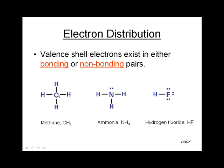Carbon does not have any non-bonding electrons around it. Let's look at the next example — ammonia, or the NH3 molecule. Each line between these atoms, between a nitrogen and a hydrogen, represents a shared electron pair, so there are three bonding electron pairs. However, the nitrogen also has a non-bonding electron pair — two electrons in this non-bonding pair. Those two, added to the other six, account for all eight of the electrons in the valence shell around that nitrogen.